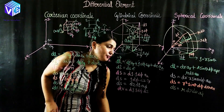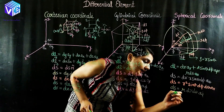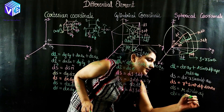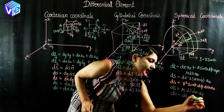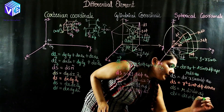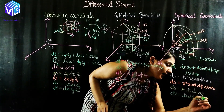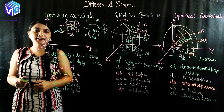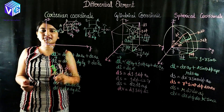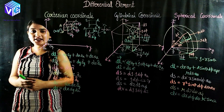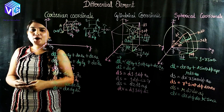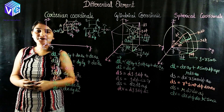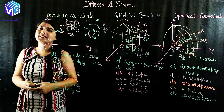For differential volume in spherical coordinates, multiplying all three lengths: dr, r·d-theta, and r·sin(theta)·d-phi gives dv = r²·sin(theta)·dr·d-theta·d-phi. I hope you now understand each differential element in all three coordinate systems. If you have any confusion, put your doubt in the comments. If you like this video, share it, subscribe the channel, and push the like button. Thank you so much.